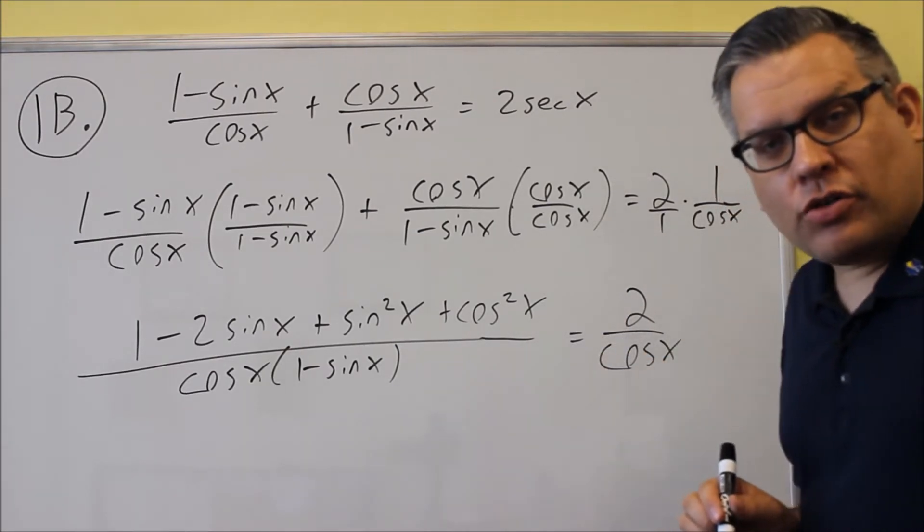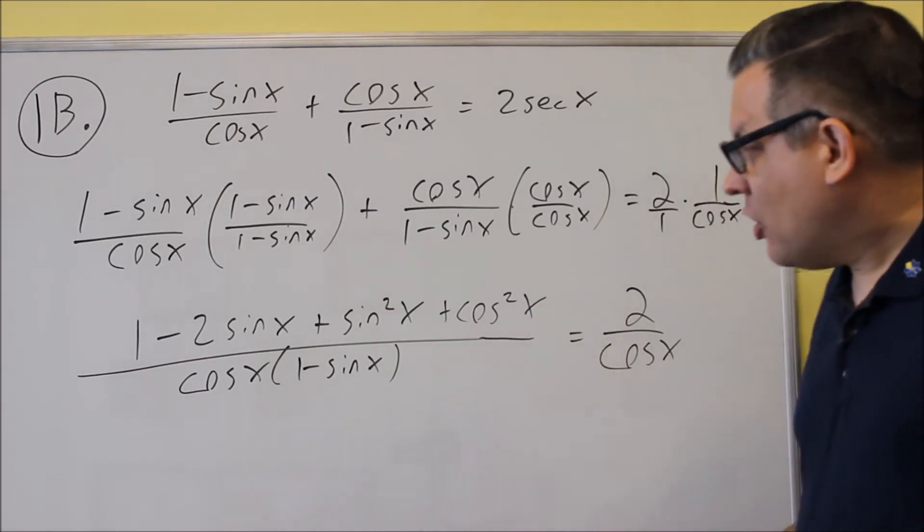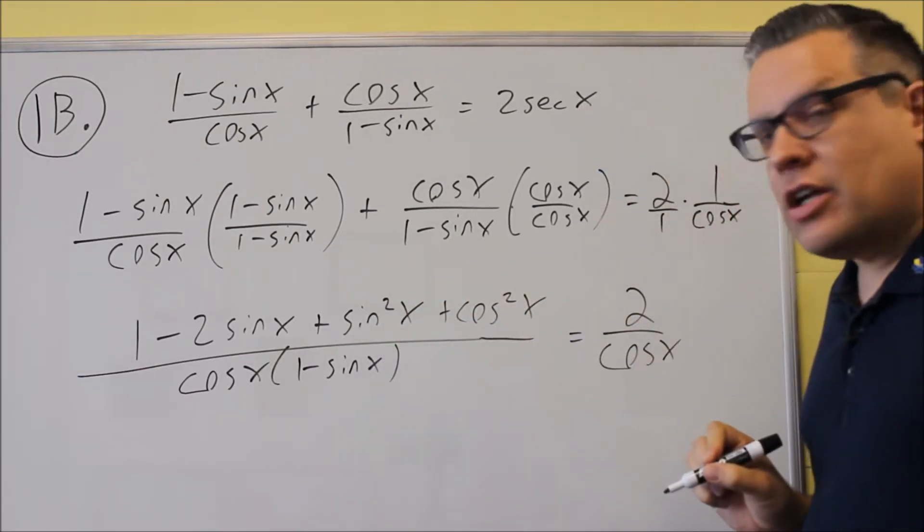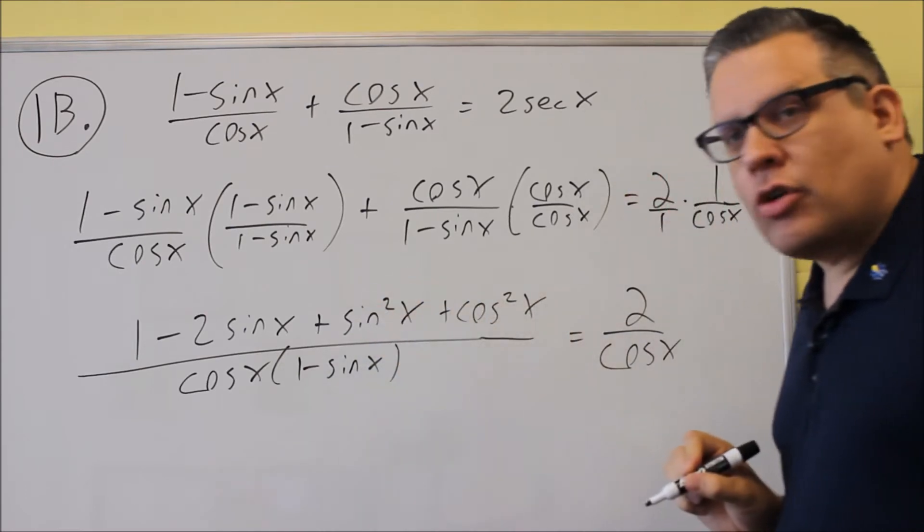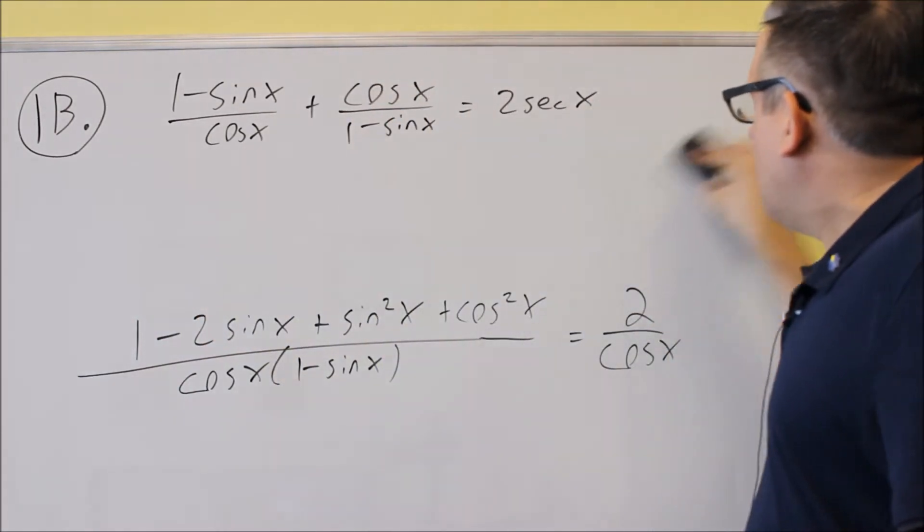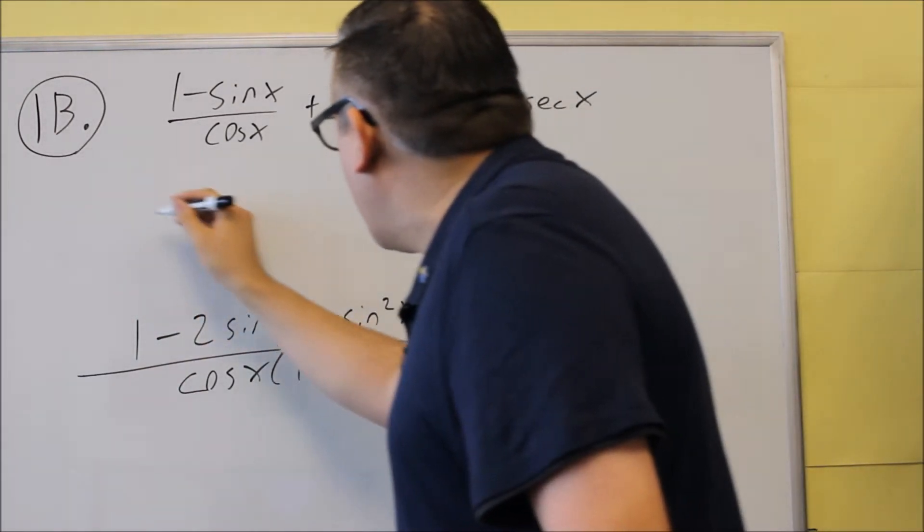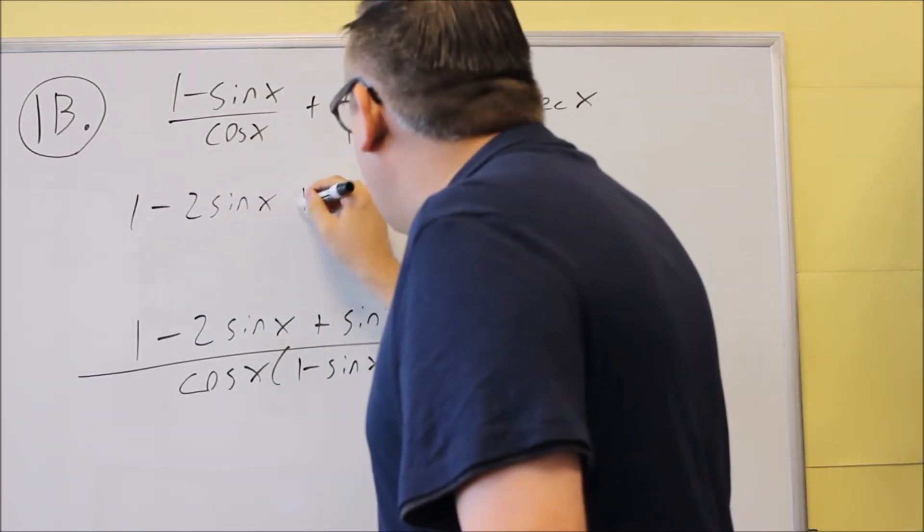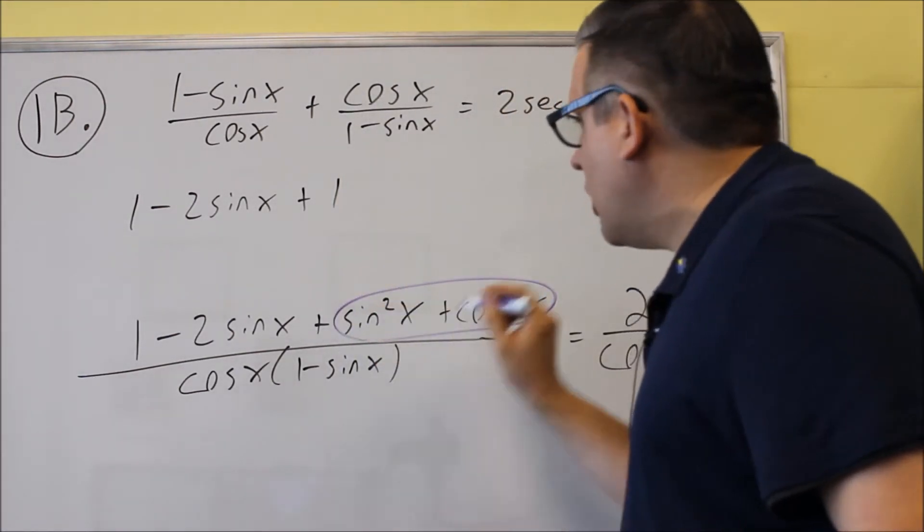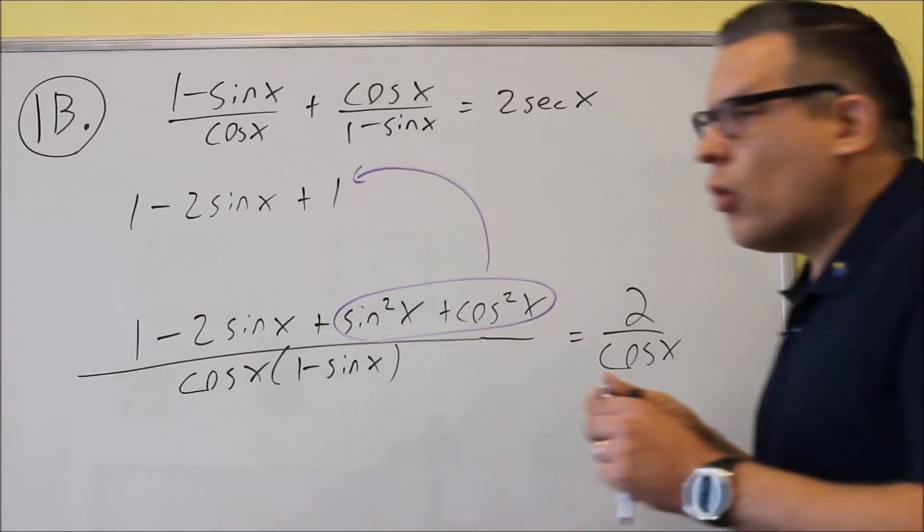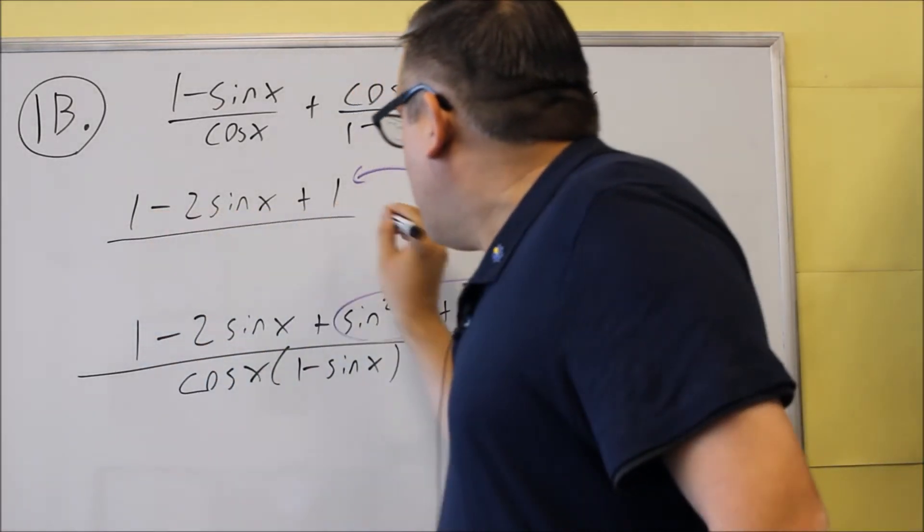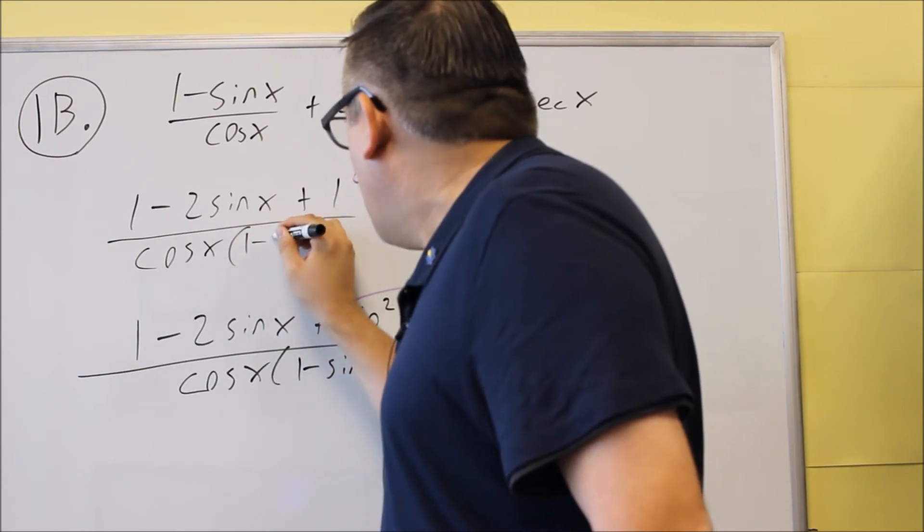Like the last problem, what you want to do is look for special identities. We have another special identity right here. We have the sine squared x plus cosine squared x, which we can turn that into a 1. So all that we're going to turn into a 1 on the next step. So when we rewrite that on the top, 1 minus 2 sine x, and then I have plus 1. This right here, sine squared plus cosine squared, all that is the 1 that you have right here. We still have the bottom, cosine x times 1 minus sine x.